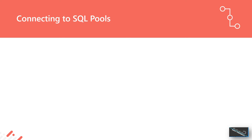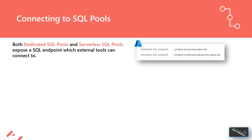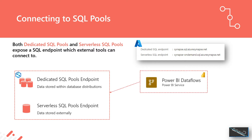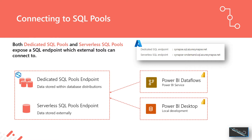To connect to SQL pools in Synapse Analytics, we have two endpoints, visible through the Azure portal, and we can connect external tools — BI tools, for example — to both these endpoints. We've got dedicated, where the data is stored within the database distributions itself, and serverless SQL pools, where the data is stored externally. We can connect both Power BI Desktop in local development and Power BI service artifacts like Dataflows to both dedicated and serverless endpoints.